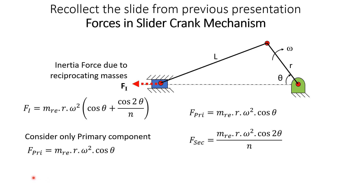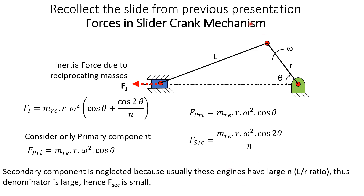For this presentation we will consider only the primary component and ignore the secondary component. The reason is that the connecting rod length L is usually much larger than crank radius r, making n = L/r large, so F_secondary becomes very small and can safely be neglected.